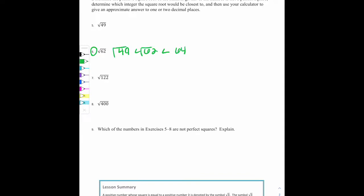So if I were to take the square root of all three of those, the square root of 49 is 7. The square root of 62 is not a nice number. It's not a perfect square. So we're going to leave it the square root of 62. And I know the square root of 64 is 8, because 8 times 8 gives me 64.